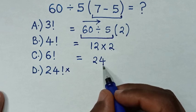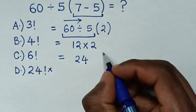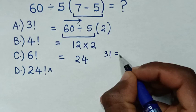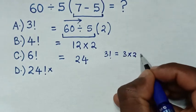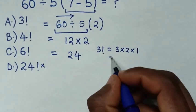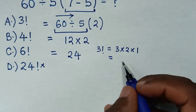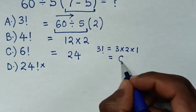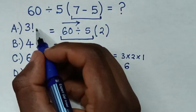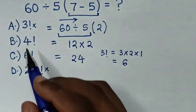Now, to get 24, from the multiple choice, starting with 3 factorial, 3 factorial is equal to 3 times 2 times 1, which is equal to 3 times 2 is 6, 6 times 1 is 6. So, 3 factorial is not correct.